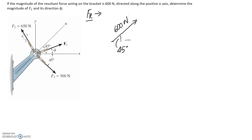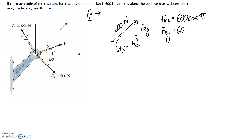We want to put the resultant into x and y components. So FRy is the vertical component and FRx is the horizontal component. Because we know the magnitude and direction, this is fairly straightforward. FRx is going to be equal to 600 cos 45, since we're looking for the adjacent side to this angle. Similarly, FRy is going to be 600 sin 45, since it's the opposite side.